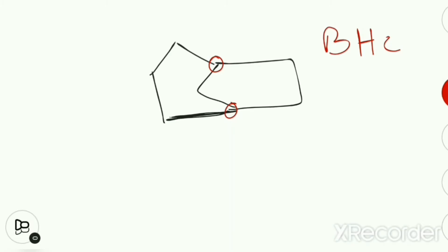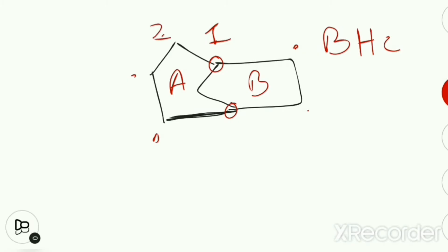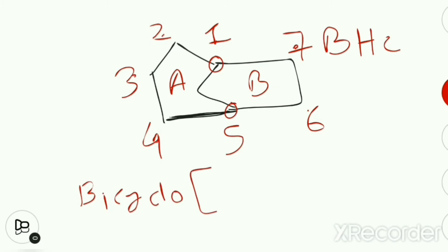For nomenclature we first do the numbering. Numbering always starts from any one of the BHC — the Bridge Headed Carbon. Suppose this is carbon number 1. Then we follow numbering towards the largest ring first. Ring A has 3 carbon atoms, ring B has 2 carbon atoms, so ring A is larger. Numbering goes: carbon 2, 3, 4, 5, 6, 7.